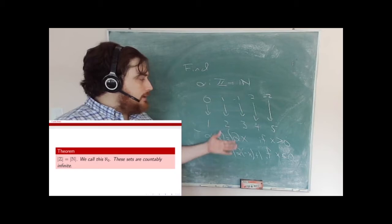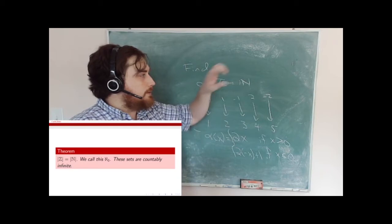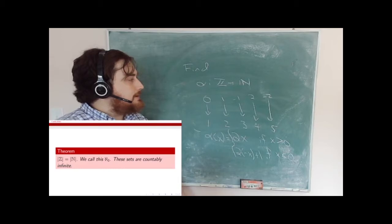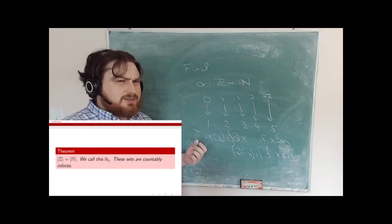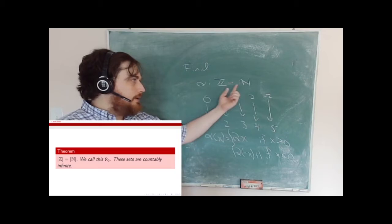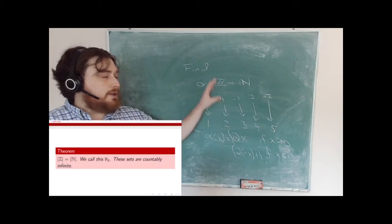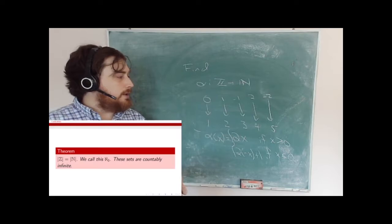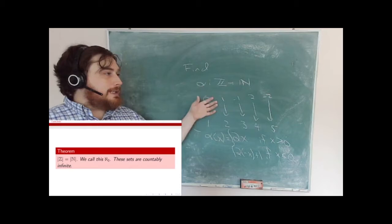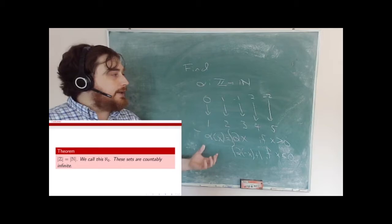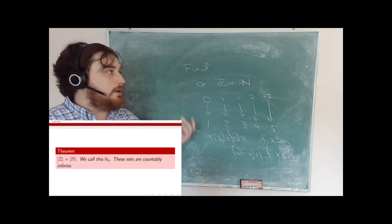So the cardinality of the integers is the same as the cardinality of the natural numbers. What does that mean? There are as many natural numbers as there are integers, which is actually counterintuitive, because there are clearly integers which are not natural numbers. Every natural number is an integer, so the integers should be bigger because we have extra ones like negative one, negative two, negative three, and zero. However, because these are infinite cardinalities, I can find a mapping that's one-to-one and onto.